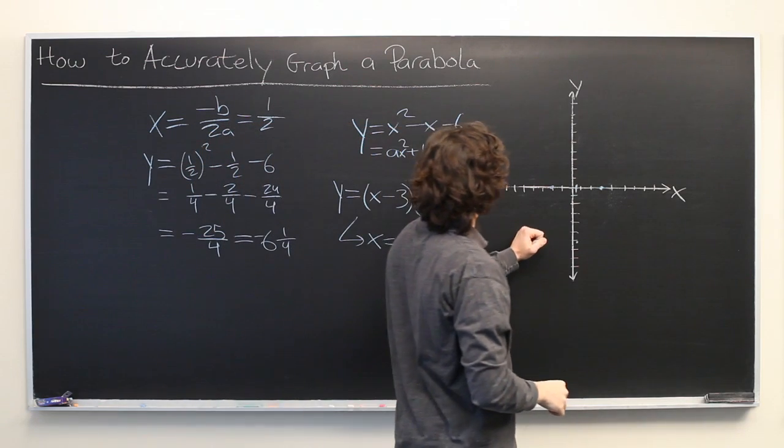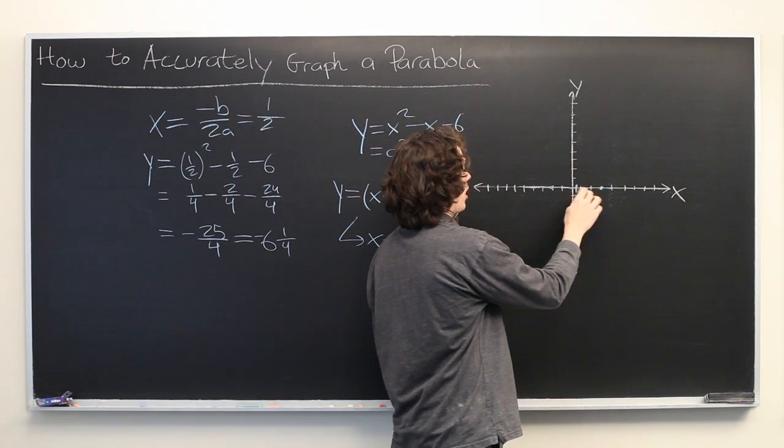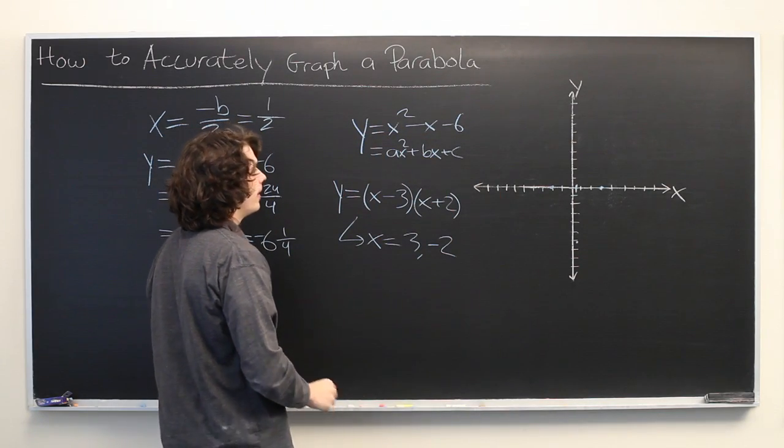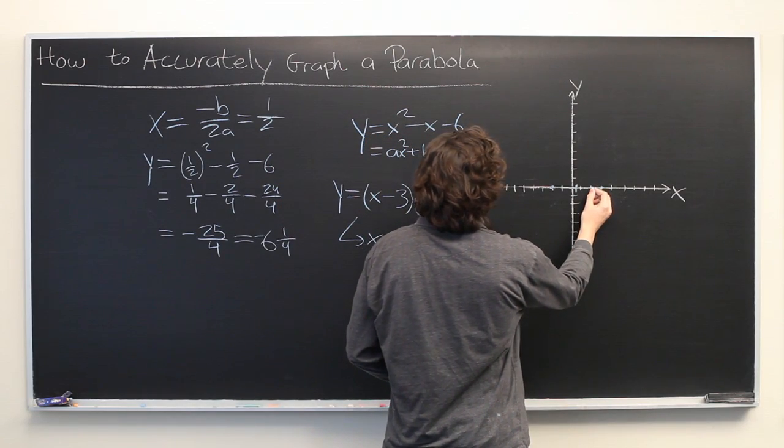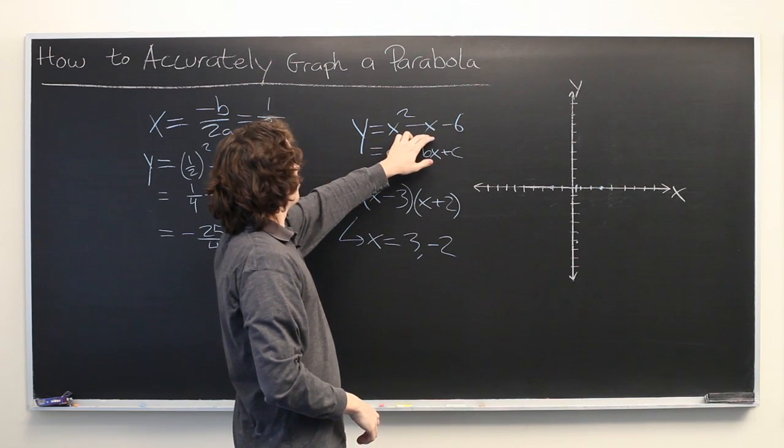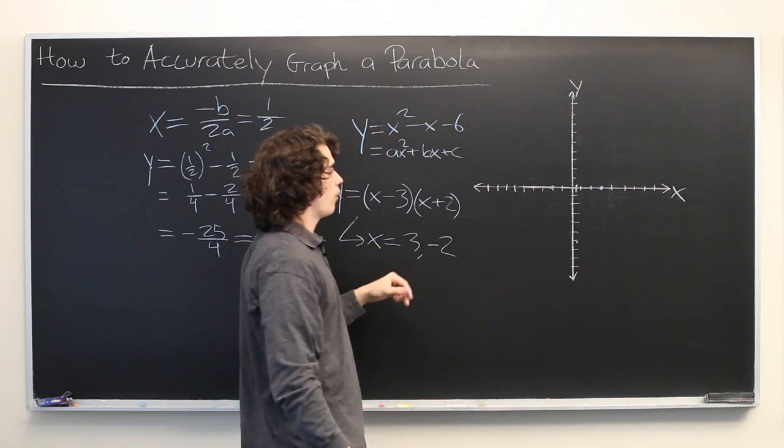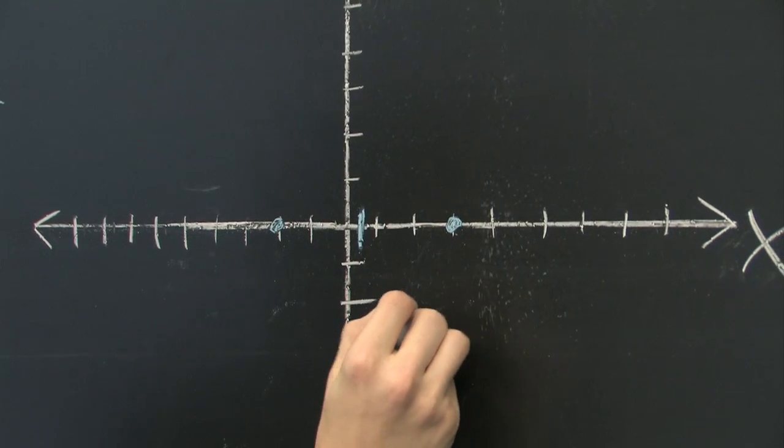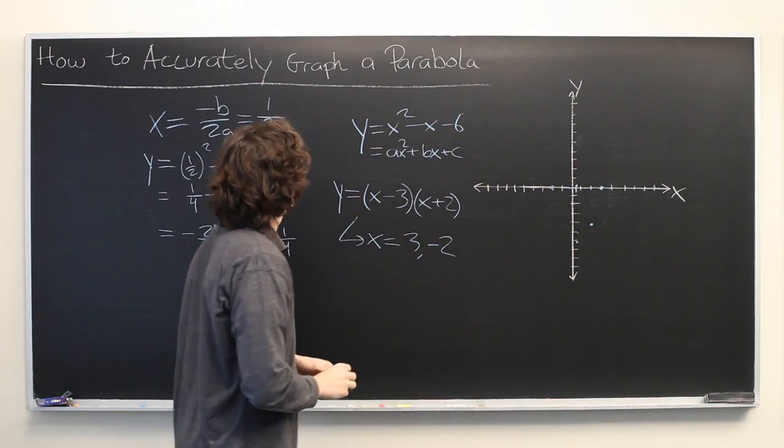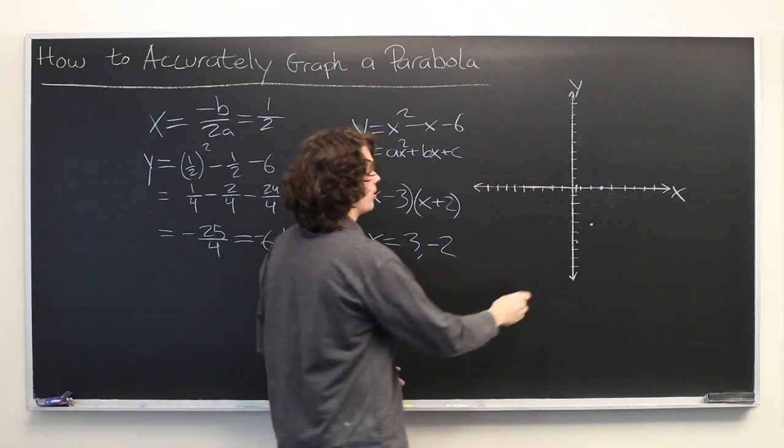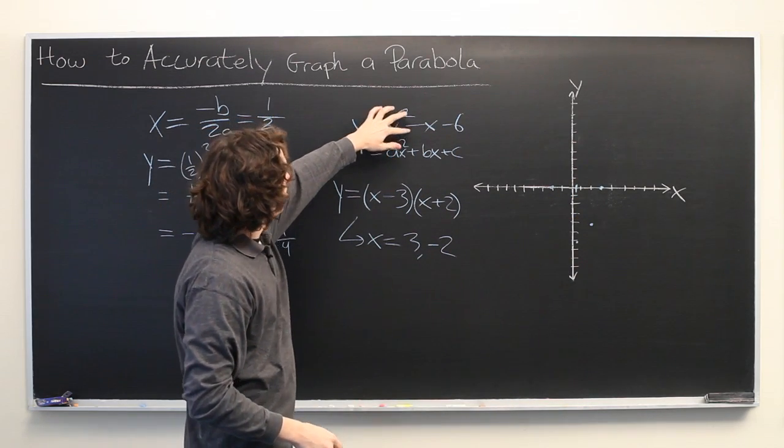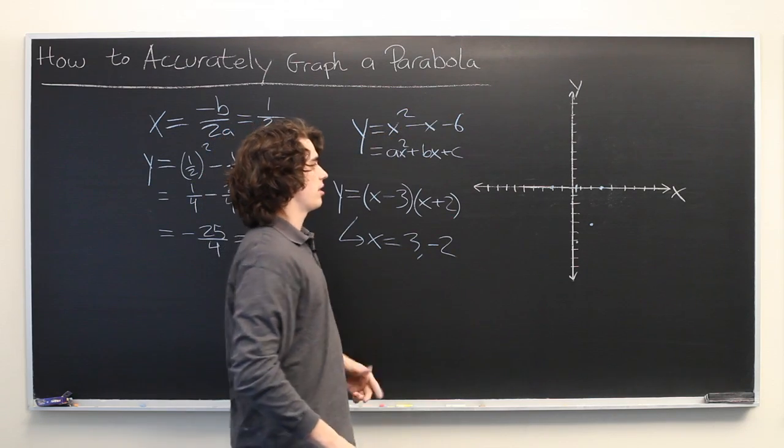And from here, if you just want to be extra careful, you can plug in a few more x values in the equation and then get some more points. So, we'll go ahead and do that. We'll start with, let's say, x equals 2. We get 2 squared is 4, minus 2 is 2, minus 6 is negative 4. If we plug in negative 1, we should get the same value because of our symmetry that we discussed earlier. So, negative 1 squared is 1, minus negative 1 is 2, minus 6 is negative 4. Perfect.